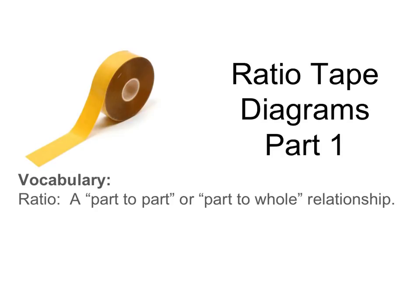In this video, we're going to learn how to use tape diagrams to solve problems involving ratios. For vocabulary, a ratio is either a part-to-part or a part-to-whole relationship. For example, let's say that my fruit trees produce two pears for every one apple — my pear tree is twice as productive as my apple tree.